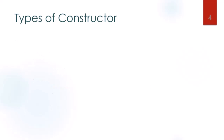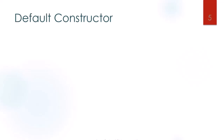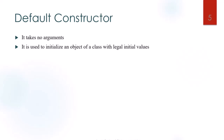There are three types of constructor: the default constructor, the parameterized constructor, and the copy constructor. The first one is the default constructor. As the name indicates, the default constructor is not going to have any arguments. It is used to initialize an object of the class with legal initial values, which can be initialized to zero.